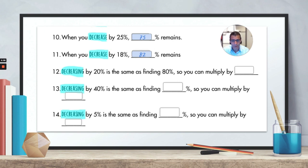Decreasing by 20% is the same as finding 80%. So you should multiply by 0.8. That's the answer for that question. Decreasing by 40% is the same as finding 60%. So you can multiply by 0.6. Decreasing by 5% is the same as finding 95%. So you can multiply by 0.95. Well done if you've done these correctly.